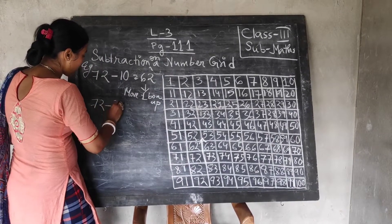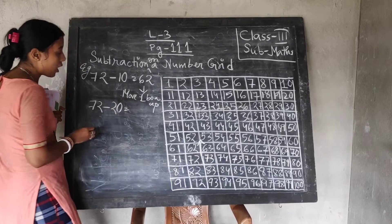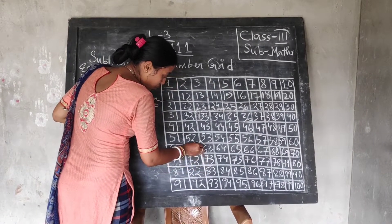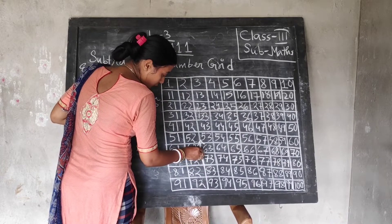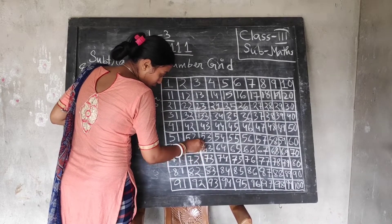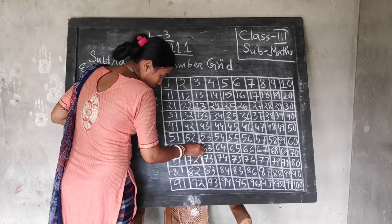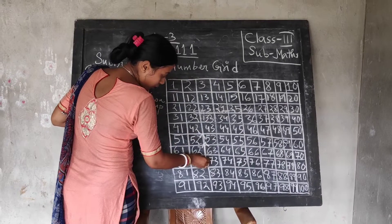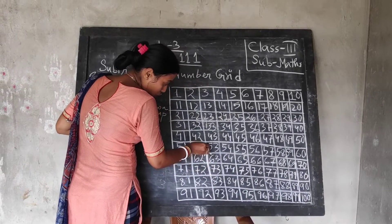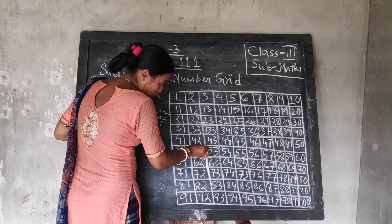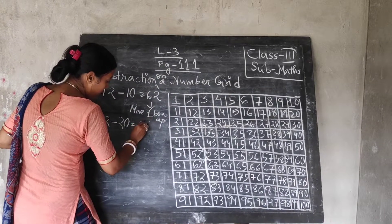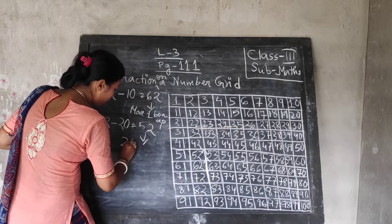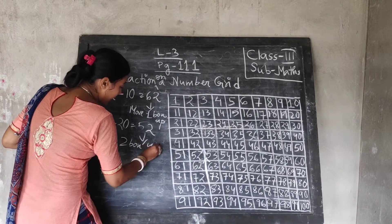Then, like this — 72 minus 20. How will it come? By moving two boxes up. Then 72 minus 20 will come — how much? 52. How many boxes did we move? Two boxes up. So, 72 minus 20 is 52. We have moved two boxes up. Like this, it will continue.